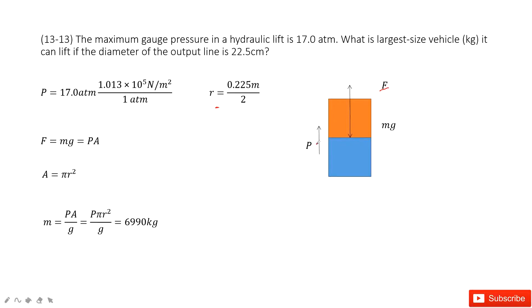So P times A. So this force equals gravity and also equals P times A. And A is pi r squared. So now we input A in this function. We can get the function for the mass.